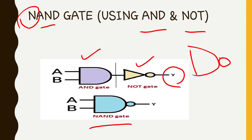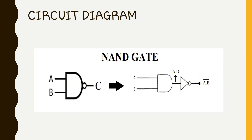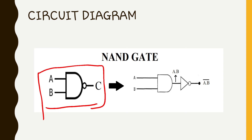Here we have inputs and here we have the output. If you see the complete circuit diagram, then it will be this way — we have inputs A and B. If you see the NAND gate design, then you will see this diagram with A and B.